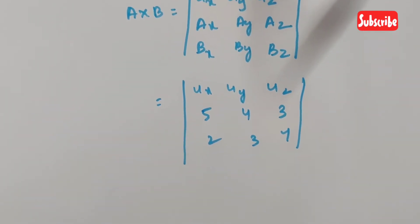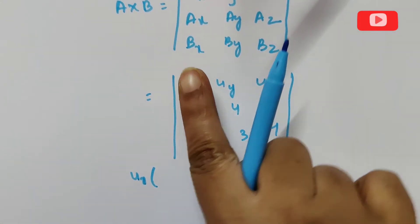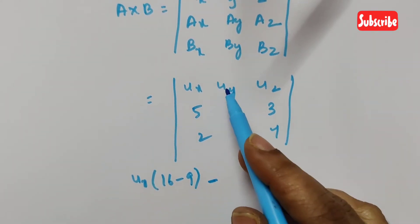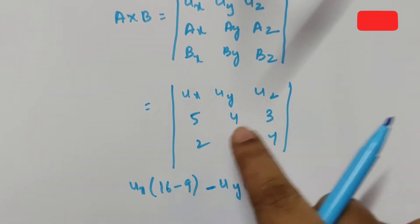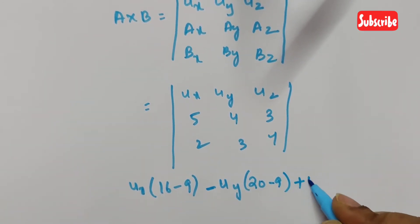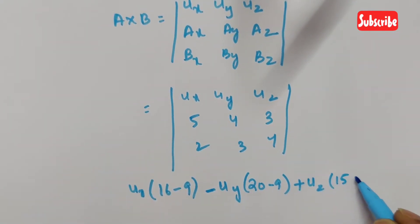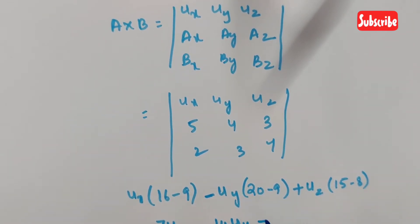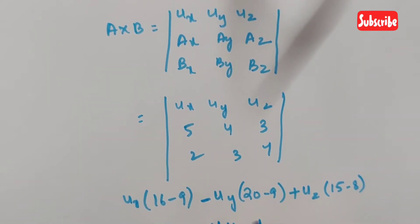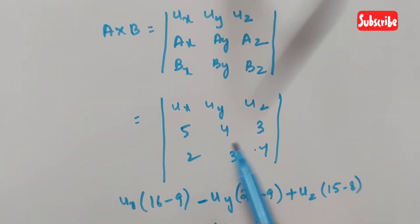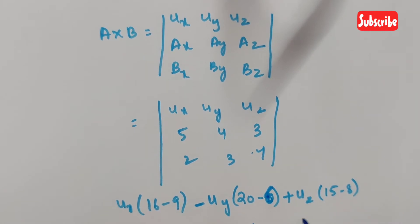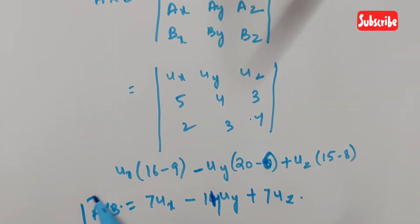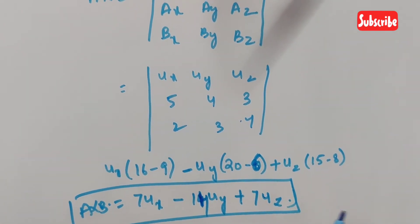Expanding the determinant: ux component = (4×4 − 3×3) = 16 − 9 = 7; uy component = −(5×4 − 3×2) = −(20 − 6) = −14; uz component = (5×3 − 4×2) = 15 − 8 = 7. So A cross B = 7ux − 14uy + 7uz.